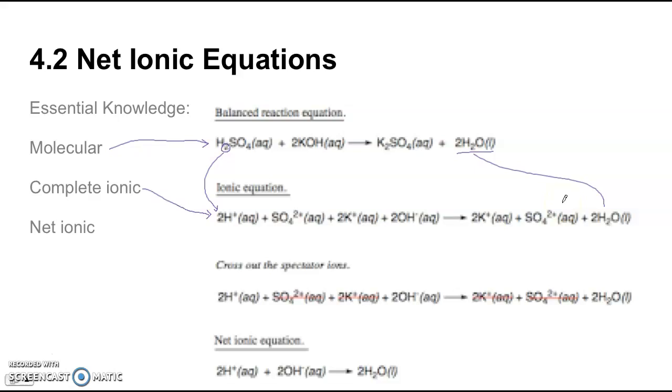But when you write out complete ionic, solids and liquids will stay together as a molecule. So this 2H2O stays together in the complete ionic reaction. And then for net ionic, to go from complete ionic to net ionic, we want to cancel out spectator ions. And spectator ions are just species that don't change over the reaction. So in this case we have sulfate and potassium that are spectators, so they get canceled out. And then we're only showing the substances that are changing in the reaction. So we get rid of those spectators and this is all that's left for the net ionic.